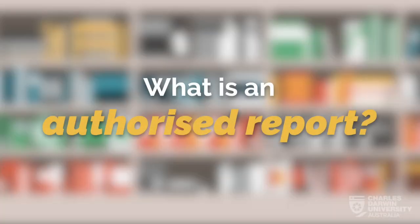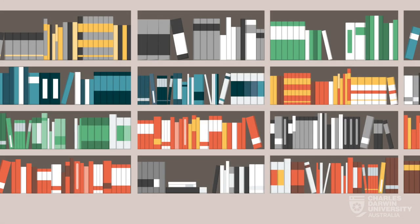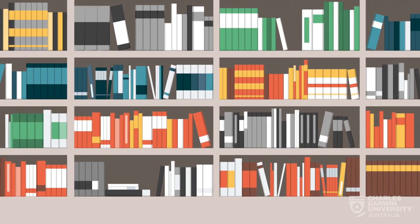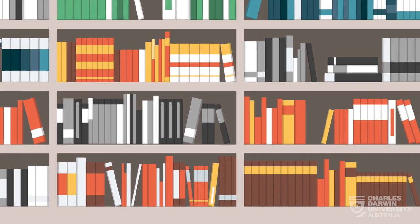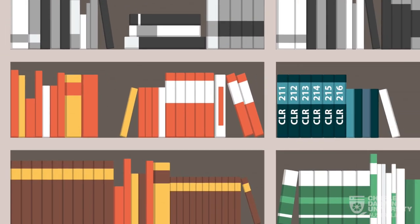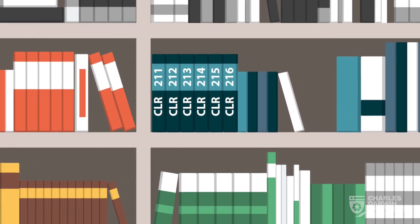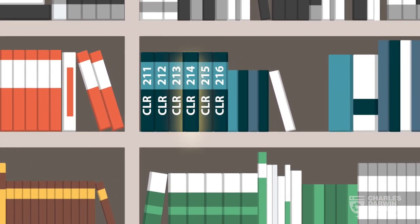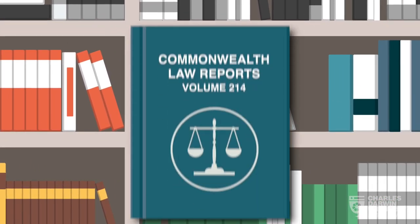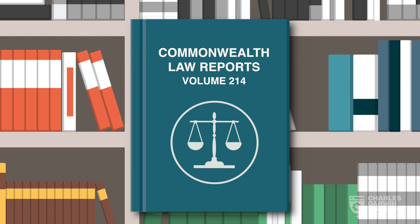Authorised law reports are the official and preferred law reports. Cases published in an authorised report are the version of a judgement that has been approved by a judge or their associate. If a case has been published in an authorised report, this version should be used and cited.